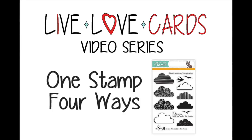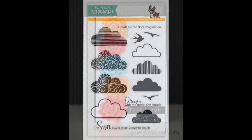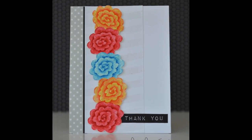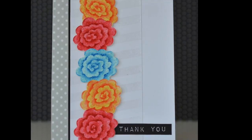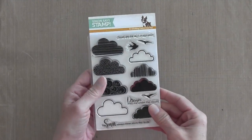Hi everyone, it's Darlene. Welcome back for card number four in my video series One Stamp Four Ways. I'm using this stamp set called Cloudy Skies by Simon Says Stamp. Each week during the month of March, the card for today is probably not what you would expect. I put two clouds together to make a flower.